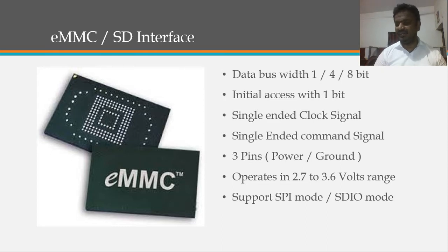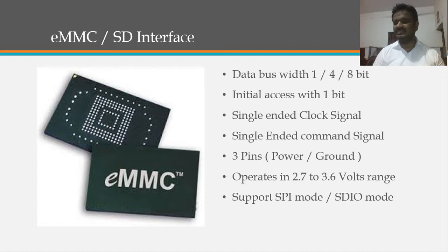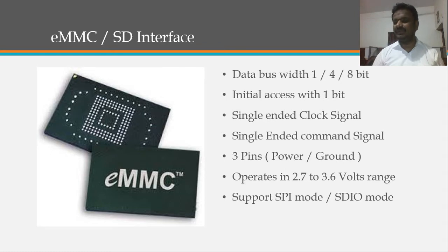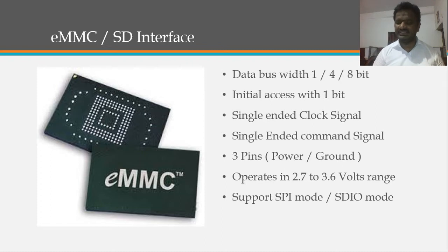eMMC and SD storage interfaces have a data bus width of 1-bit, 4-bit, or 8-bit. Initial access starts at 1-bit and the controller detects whether the device supports 4-bit or 8-bit access, then configures itself accordingly. These interfaces use a single-ended clock and single-ended command signal with three power and ground pins. They operate in the 2.7 to 3.6 volt range and support modes including SPI mode and SDIO mode. Most modern processors include a Secure Digital Host Controller Interface (SDHCI) supporting SDIO.